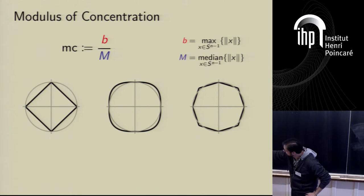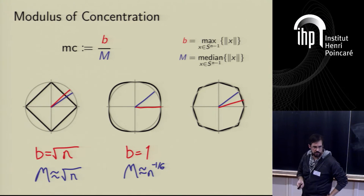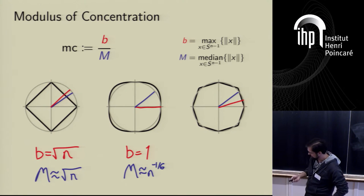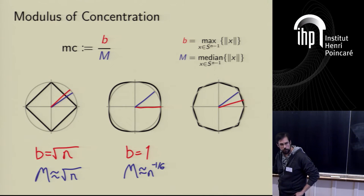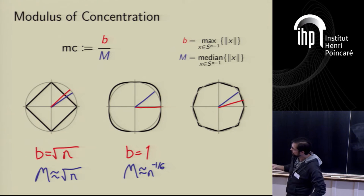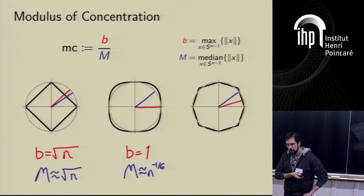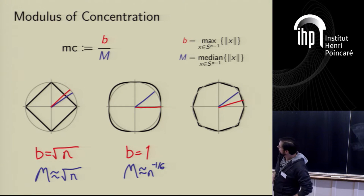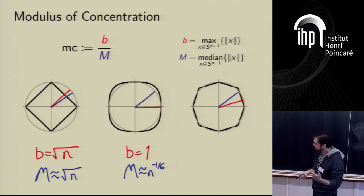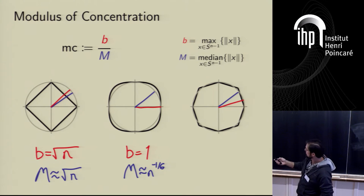Here are some examples with unit balls for L1, L3, and another norm. For the L1 ball, b is √n — achieved in the all-ones direction — and the median is also about √n, so the modulus of concentration is about 1. A nice rule of thumb: to find the median, look at a vector in the all-ones direction scaled by 1/√n. For the L3 norm, b = 1 (achieved by any standard basis vector) but the median is about n^{-1/6}, so the ratio is n^{1/6}.